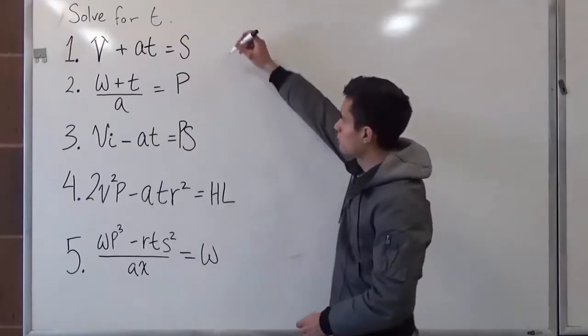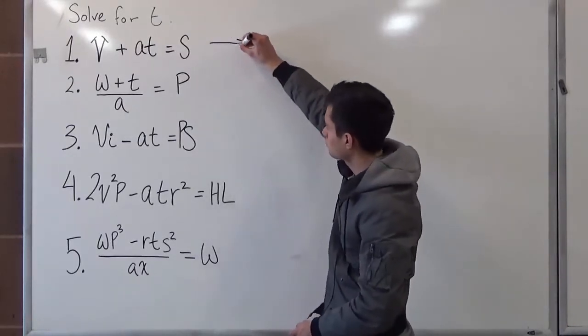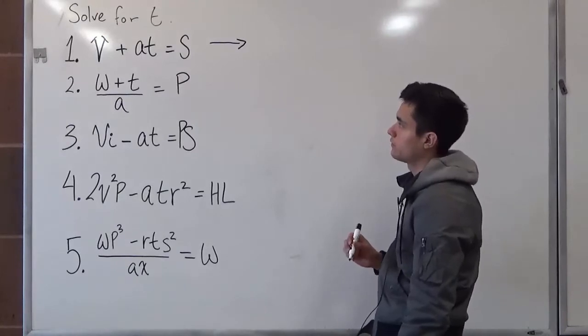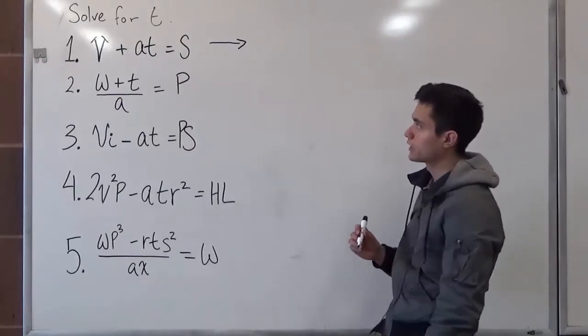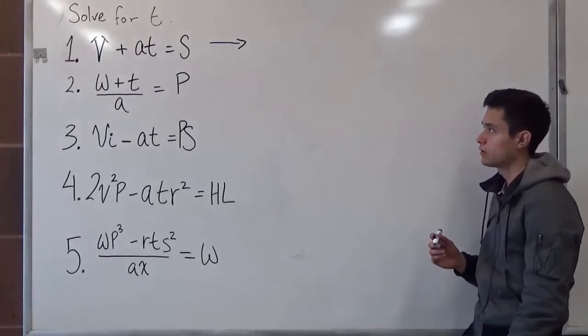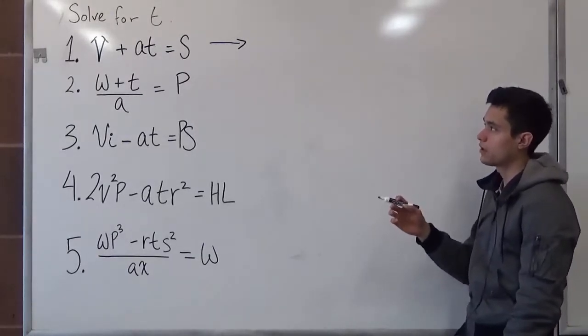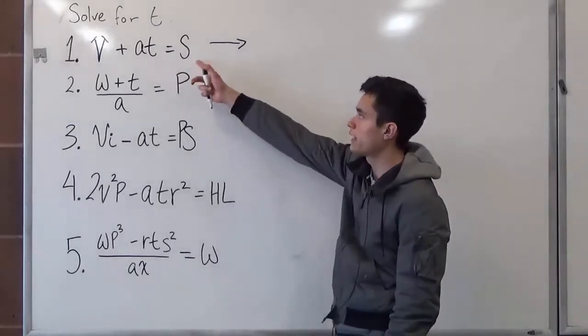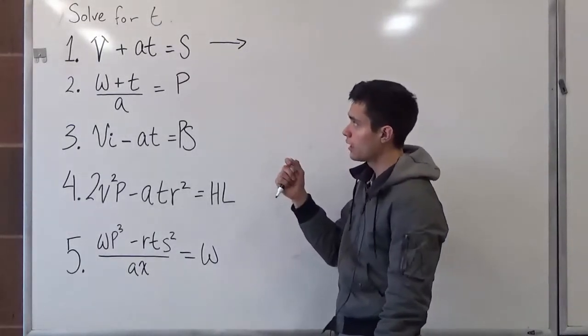So let's start with problem number one. We have v plus at is equal to s. Since our main objective here is to get t by itself, we want to move all these variables on one side. So we see the first variable s and we see v.